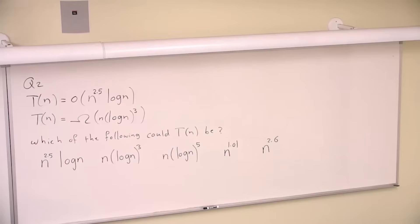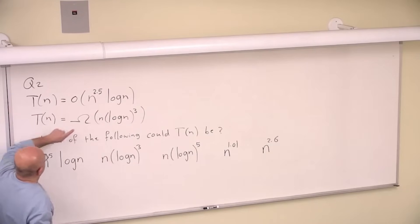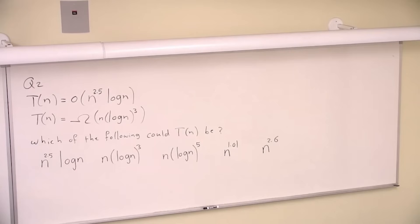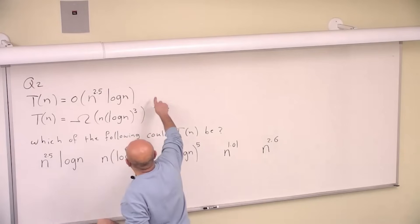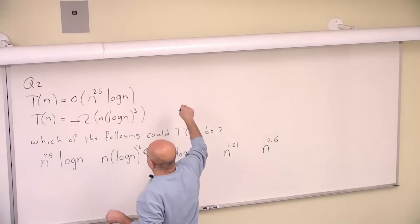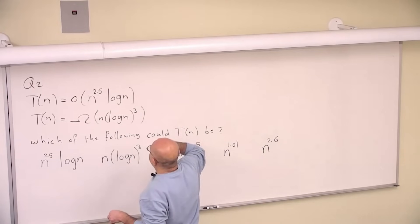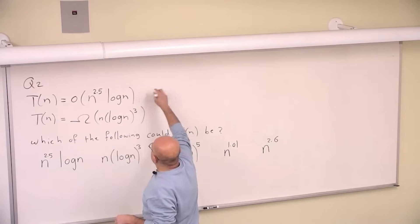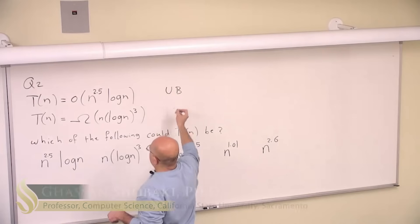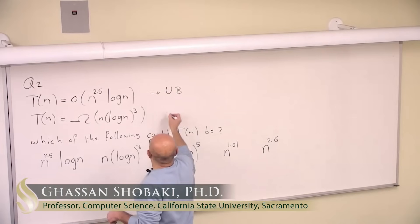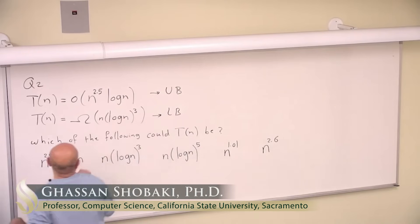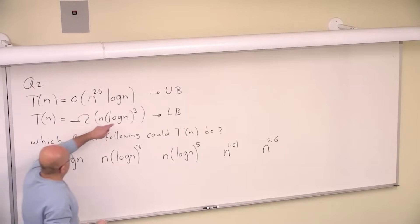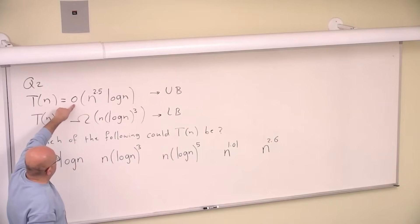Let's discuss question number two. T of n is small o of this and big omega of this. Small o means without equal — so big O means this is an upper bound and this is a lower bound. This is our lower bound, this is our upper bound, and this is an exclusive upper bound.